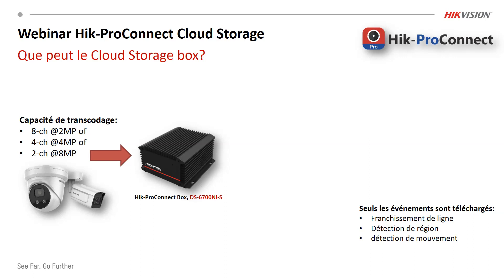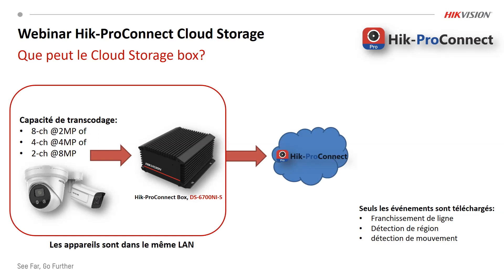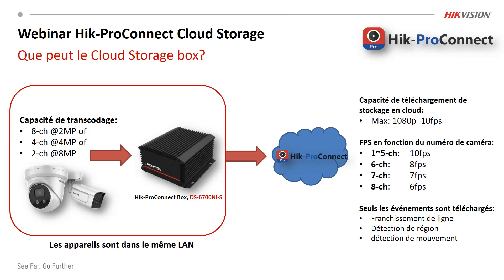Ce qu'on peut faire aussi, c'est de configurer les événements : franchissement de lignes, détection de régions, détection de mouvements. Ce qu'on sait aussi faire, et c'est très important, c'est de tester la capacité du stockage. On dit maximum 1080 à 10 frames par seconde. Ça veut dire que si vous utilisez les canaux, le nombre d'images par seconde diminue. Si vous prenez 8 canaux, ça vient à 6 frames par seconde. Si vous n'avez que 2 canaux, on peut envisager de faire les 2 canaux à 8 mégapixels. On peut mettre plusieurs boîtes dépendant de la qualité dont vous avez besoin. Le transcodage veut dire changer la résolution et le frame rate des images chez le client vers une autre résolution et frame rate.